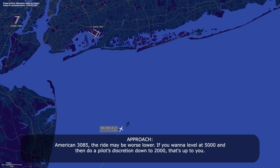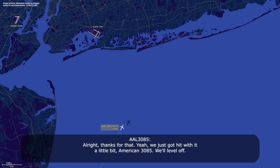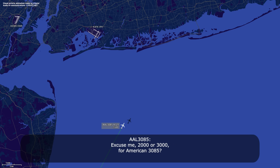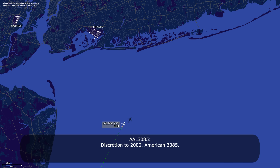American 385, the ride may be worse — lower if you want to level at 5,000 and then do a pilot discretion down to 2, that's up to you. We just got hit with it a little bit. American 385 will level off. We'll let you know — pilot discretion is 3. I was going to do 2 or 3 for American 385. You can go all the way down to 2, pilot discretion is to you, American 385.